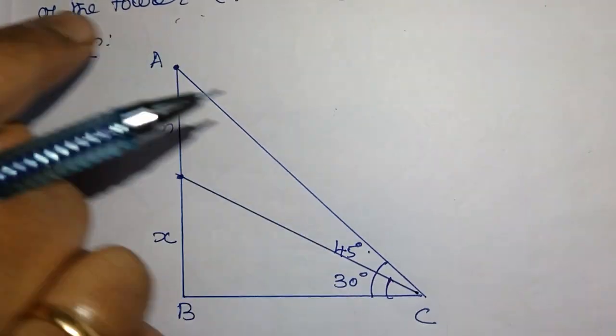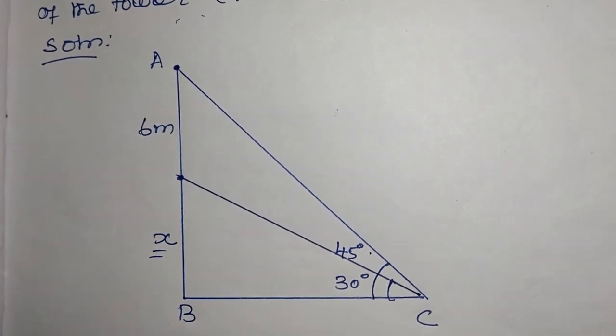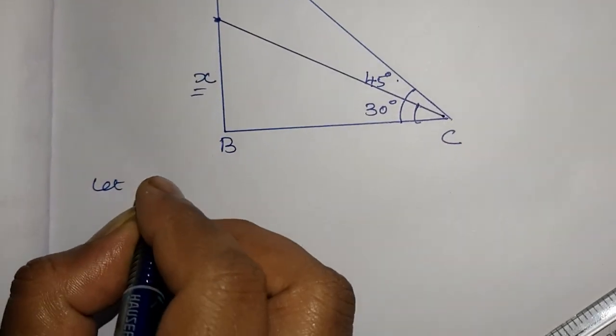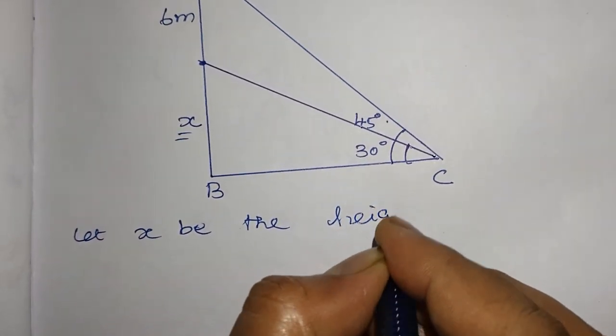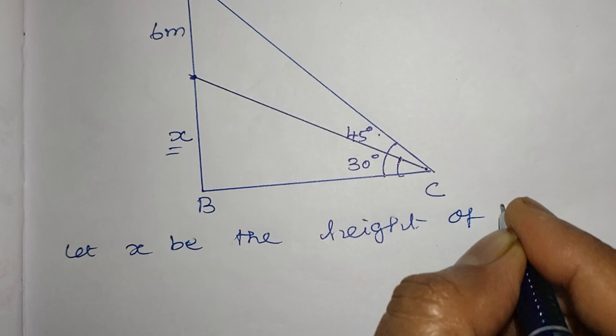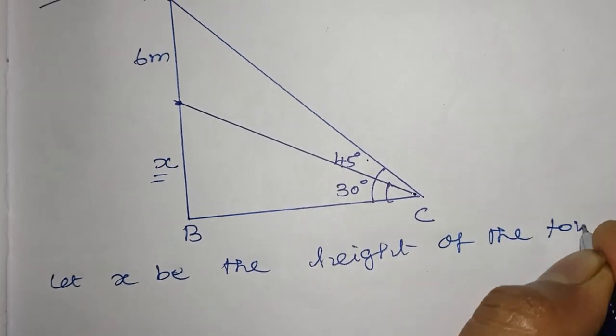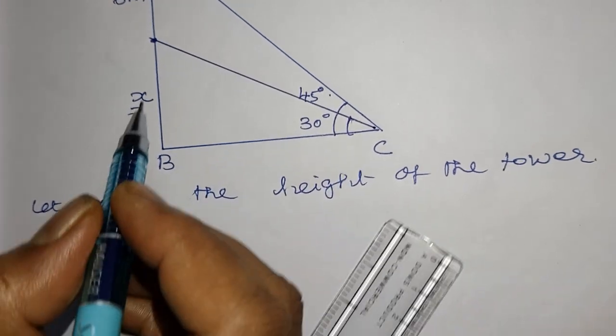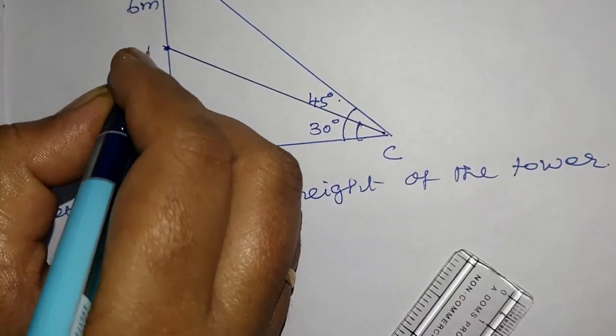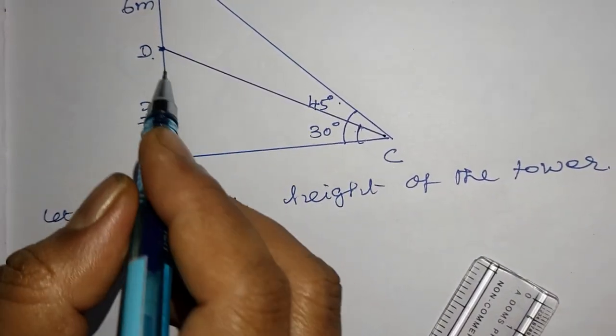So it is asked to find the height of the tower. It is asked to find X. So let X be the height of the tower. So now tan 30 degrees equal to this one A, B, C. This one D. I will take it as tan 30 degrees equal.